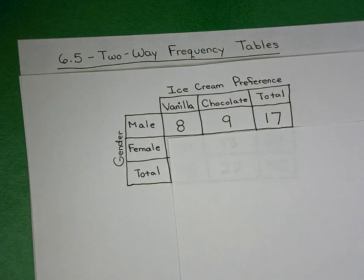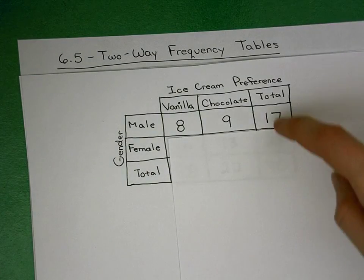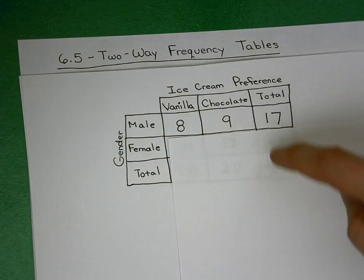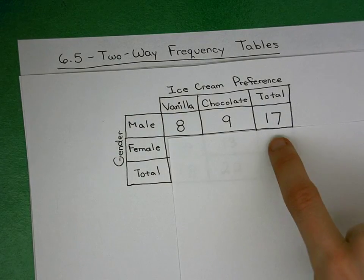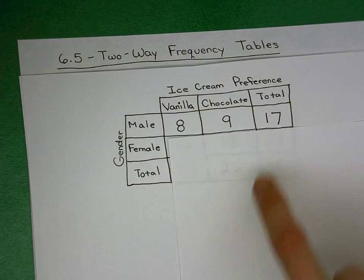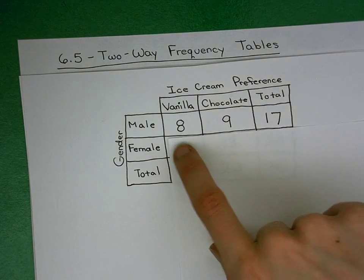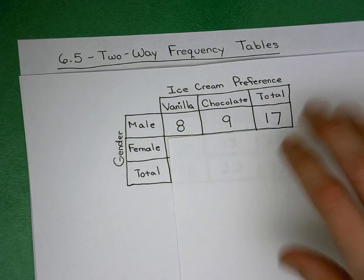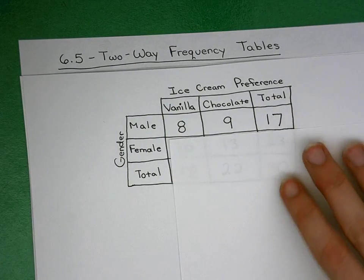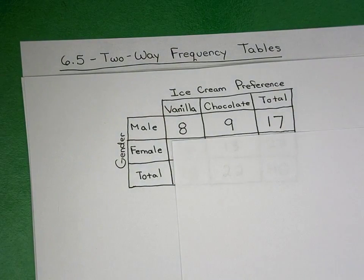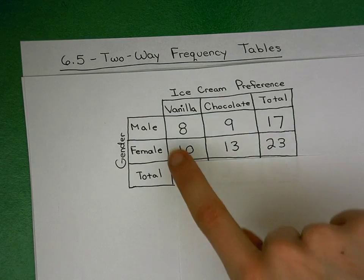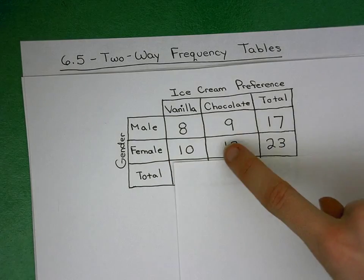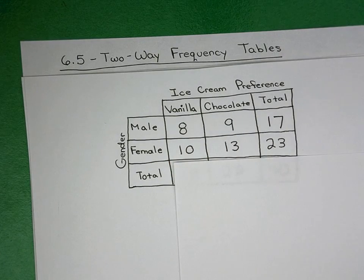For females — since we interviewed 40 total and 17 plus 23 makes 40 — we interviewed 23 females, so we put 23 here. Ten of them prefer vanilla, which means 13 must prefer chocolate. That's my female row: ten prefer vanilla, 13 prefer chocolate, 23 total.